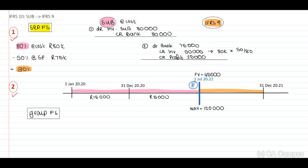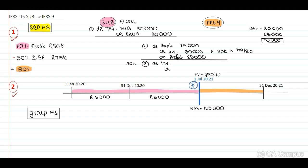In the separate records, our next step is to measure the retained interest. The 30% we need to measure at fair value. The cost of the 30% is $30,000 — being $80,000 × 30/80. The fair value is $45,000, giving a $15,000 fair value adjustment. In the separate records we will debit the investment and credit — not the mark-to-market reserve but the fair value adjustment and profit and loss — with the $15,000.